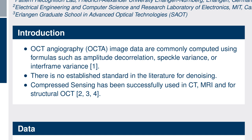For optical coherence tomography angiography, or OCTA for short, image data are commonly computed using formulas such as amplitude correlation, speckle variance, or interframe variance. To the best of our knowledge, there is no established standard for denoising of OCTA images. However, edge-preserving filters such as the median filter are popular for denoising OCTA volumes and images. Compressed sensing has been successfully used in computer tomography, MRI, and also for structural OCT — that means non-angiography data.